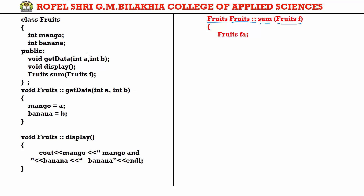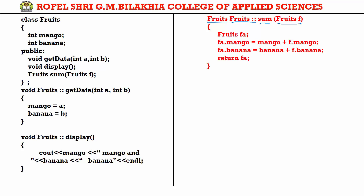Inside the sum function, FA.mango is assigned the value of mango plus F.mango — the addition of two objects' mango values. Similarly, FA.banana is assigned the addition of banana plus F.banana. The temporary object FA holds these results. In the main function this concept will become clearer. The reason we write 'mango' directly instead of 'F1.mango' will be explained when we write the main function.